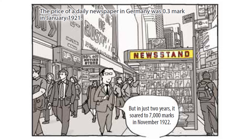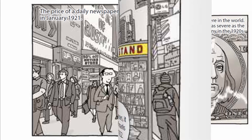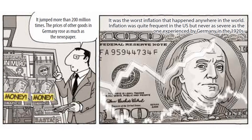The price of a daily newspaper in Germany was 0.3 mark in January 1921, but in just two years it soared to 7,000 marks in November 1922. It jumped more than 200 million times. The prices of other goods in Germany rose as much as the newspaper.